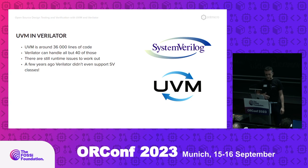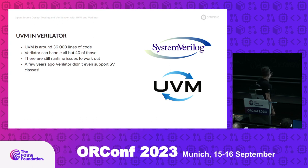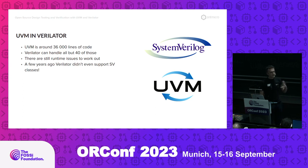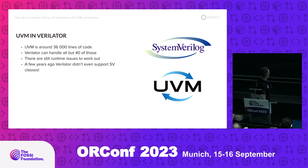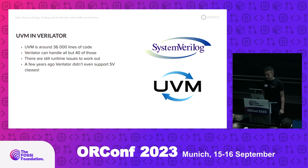To sum up UVM: UVM is about 36,000 lines of code, which gives you an idea of the scale. Verilator can handle all but 40 of those lines — so if you comment out a certain 40 lines from UVM, it Verilates and builds. The caveat is there are still some runtime issues, and if you run it, it's going to crash, partly due to those missing 40 lines and some bugs we still need to work out. But if you consider that a few years ago Verilator didn't even have classes at all, this progress is pretty exciting.